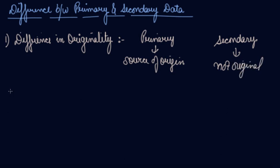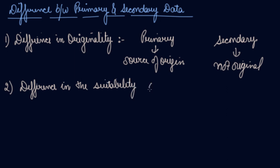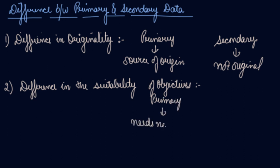The second difference is the difference in the suitability of objectives. Primary data are always related to a specific objective of the investigator, so these data do not need any adjustment for the concerned study. On the other hand, secondary data have already been collected for some other purpose, so these data need to be adjusted to suit the objective of the study at hand. So primary data needs no adjustments.